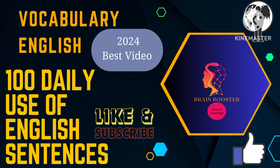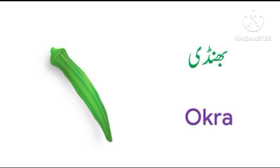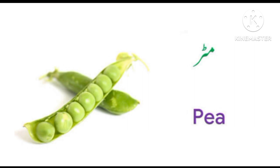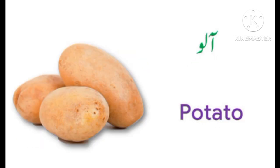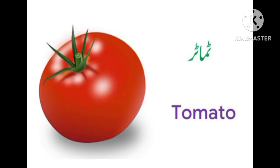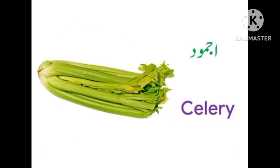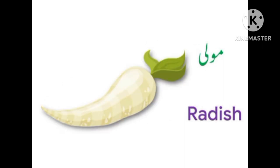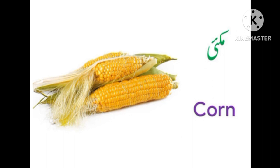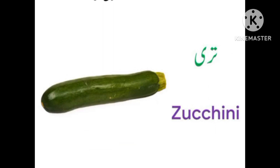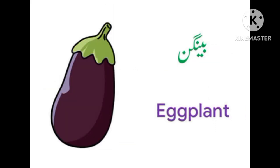The first one is okra (bindi), onion (piyaz), pea (mutter), potato (aloo), spinach (palak), tomato (tamatar), celery (ajmood), chili (mirch), radish (mooli), corn (makai), ginger (adrak), zucchini (tori), brinjal — which is also called eggplant — (baingan).